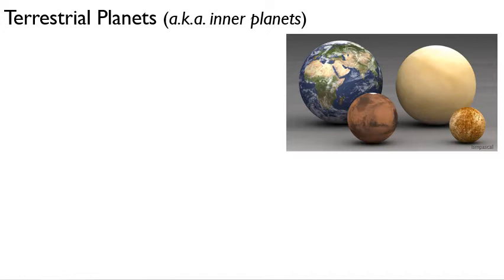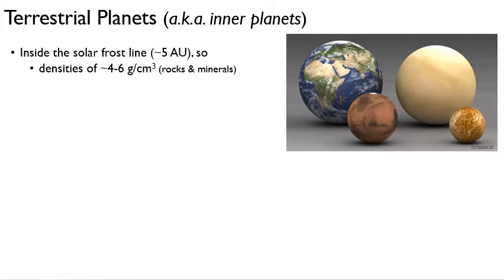So we're going to have a whole separate lecture on the introduction to terrestrial planets and a separate one on Jovian planets. But here's terrestrial planets in one slide. So these are also called the inner planets for obvious reasons, they're closer to the sun. So they're all inside the frost line, they're less than five astronomical units, so five Earth to sun distances from the sun. And because of that, they're made of rocks and minerals, and that gives them a density of on the order of five grams per centimeter cubed, your typical rock and mineral type density.